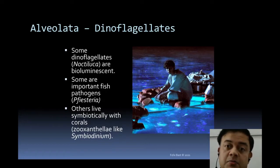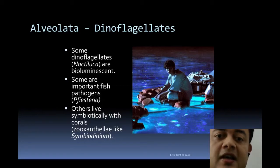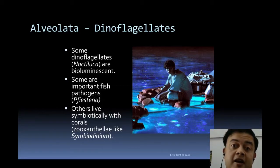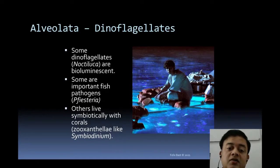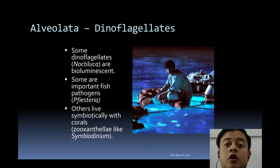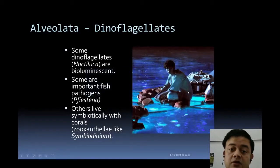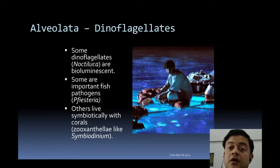Bioluminescence from these organisms can be seen in coastal regions during certain seasons, and was even featured in the Hollywood film Life of Pi. Some dinoflagellates are fish pathogens, such as Pfiesteria, while others live symbiotically with corals — these are zooxanthellae, whose genus is Symbiodinium. Without Symbiodinium, coral reefs cannot exist, and these organisms are particularly vulnerable to ocean acidification.